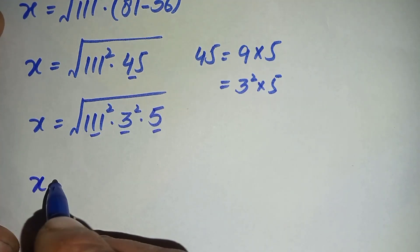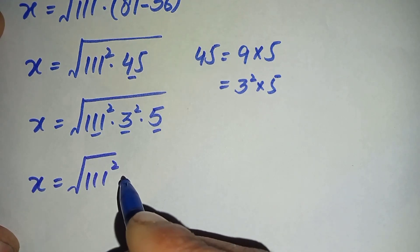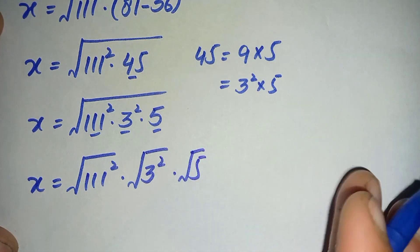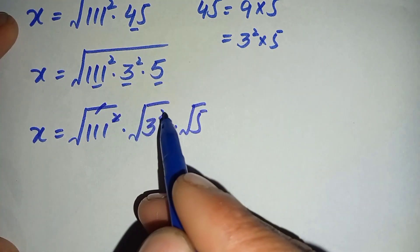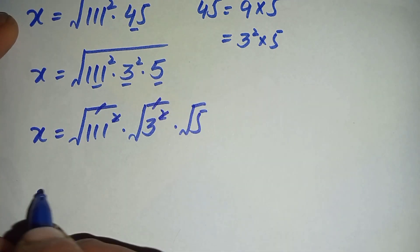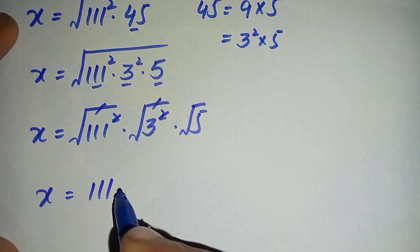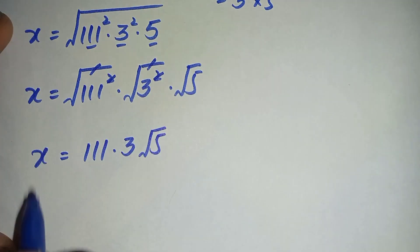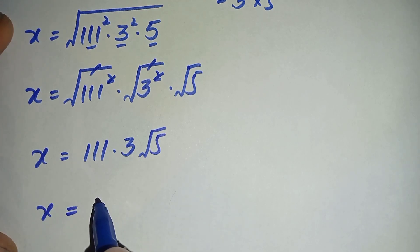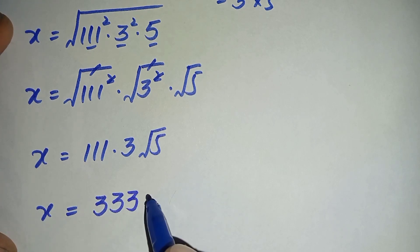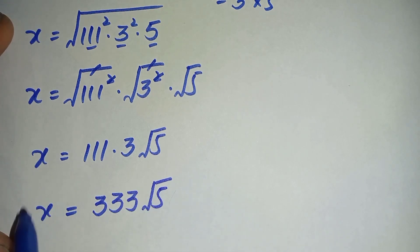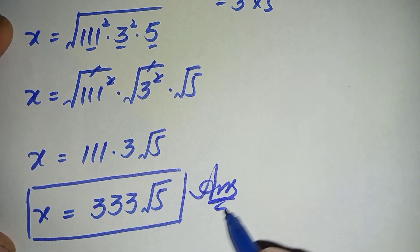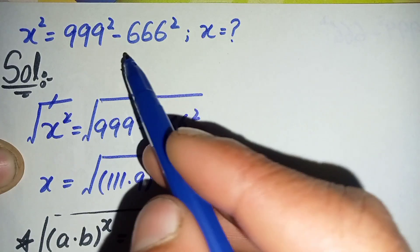The squares inside the square root will be cancelled. So x is equal to 111 times 3 times the square root of 5. Our final answer is x is equal to 333 times the square root of 5. So x equals 333 root 5 is the answer and solution of this nice squaring math problem.